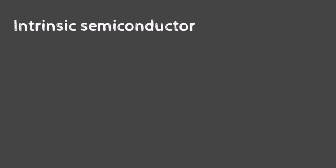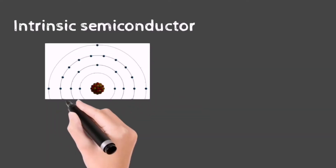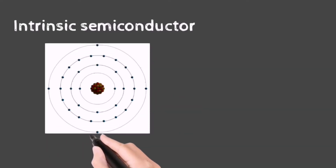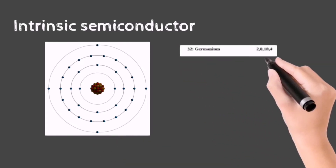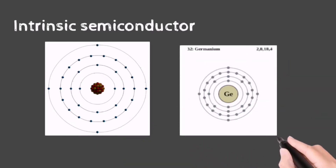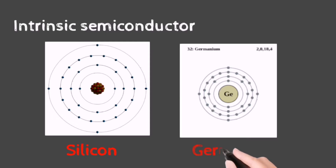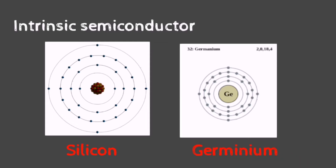Intrinsic semiconductors means they are in the purest form by nature of their existence. Common semiconductors used are silicon and germanium, and they have four valence electrons orbiting in their valence shell.